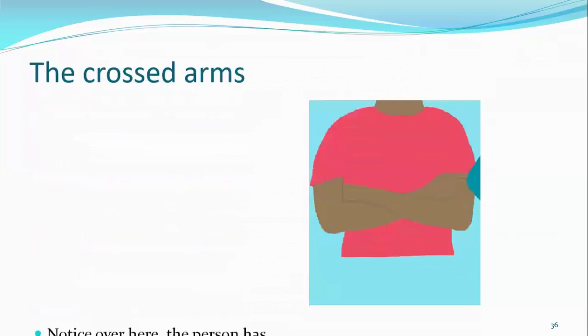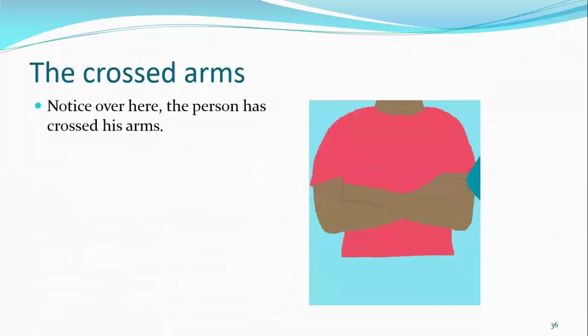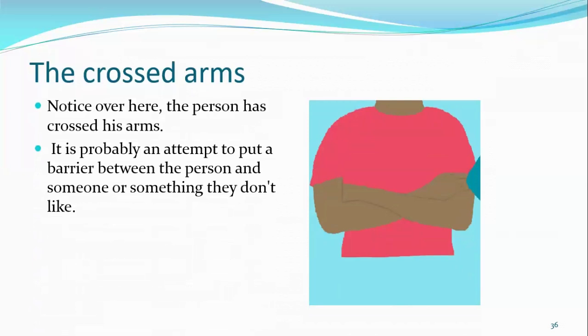The crossed arms. Notice over here, the person has crossed his arms. It is probably an attempt to put a barrier between the person and someone or something they don't like. Another reason for crossing arms may be that you're feeling vulnerable or insecure.